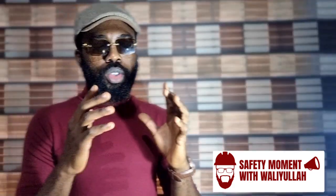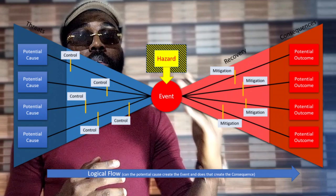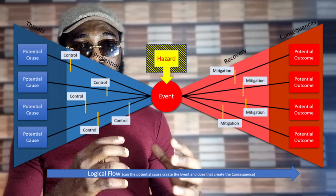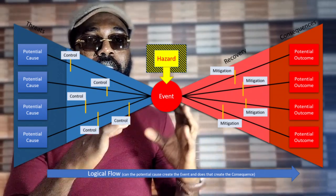Talking about the event tree and the fault tree — the event tree and the fault tree come together to form the bowtie.